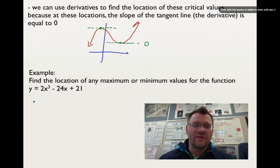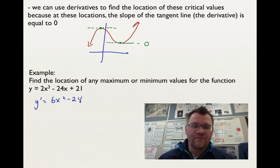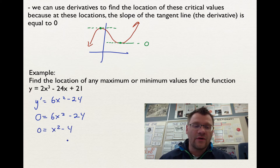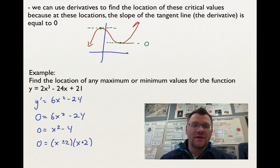We take the first derivative: y′ = 6x² − 24. We set that equal to zero because this is the derivative, which is the slope. Dividing everything by six gives 0 = x² − 4. Factoring that: (x − 2)(x + 2). So we now have our two x-values at which the function 2x³ − 24x + 21 has a maximum or minimum value — x = 2 and x = −2.